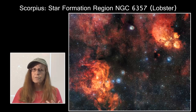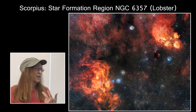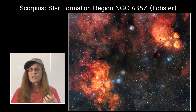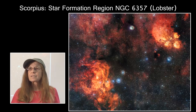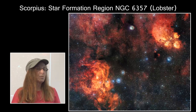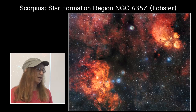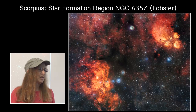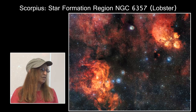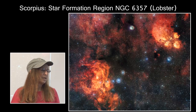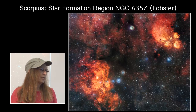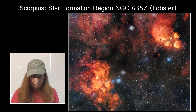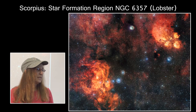Within Scorpius are two other nebulae producing star formation: the Lobster and the Cat's Paw. This particular image shows both of them — the Lobster on the left and the Cat's Paw in the upper right. The Cat's Paw looks very much like a cat's paw, but the one at the bottom doesn't look so much like a lobster — though there's another image that does.